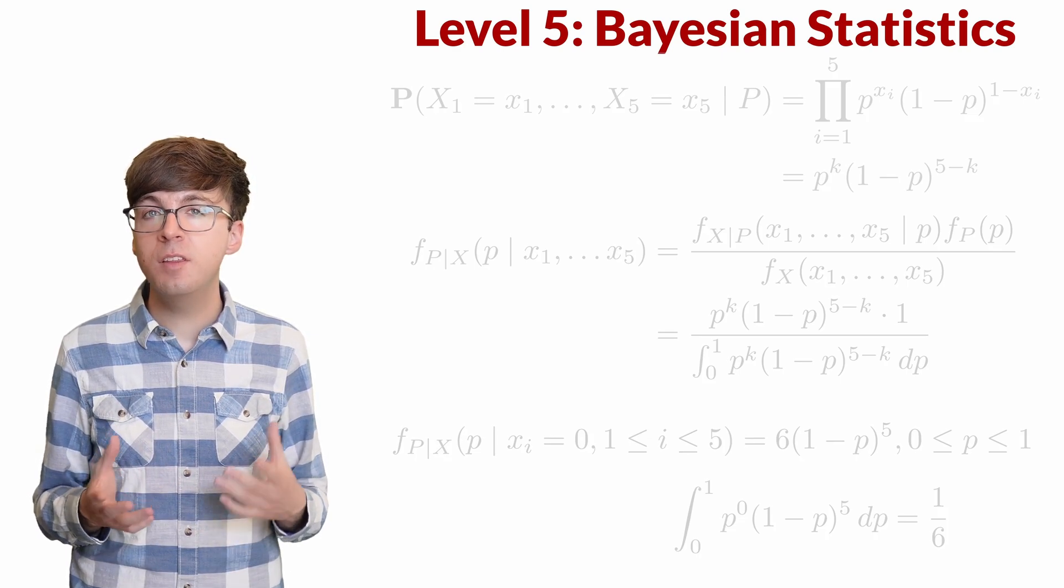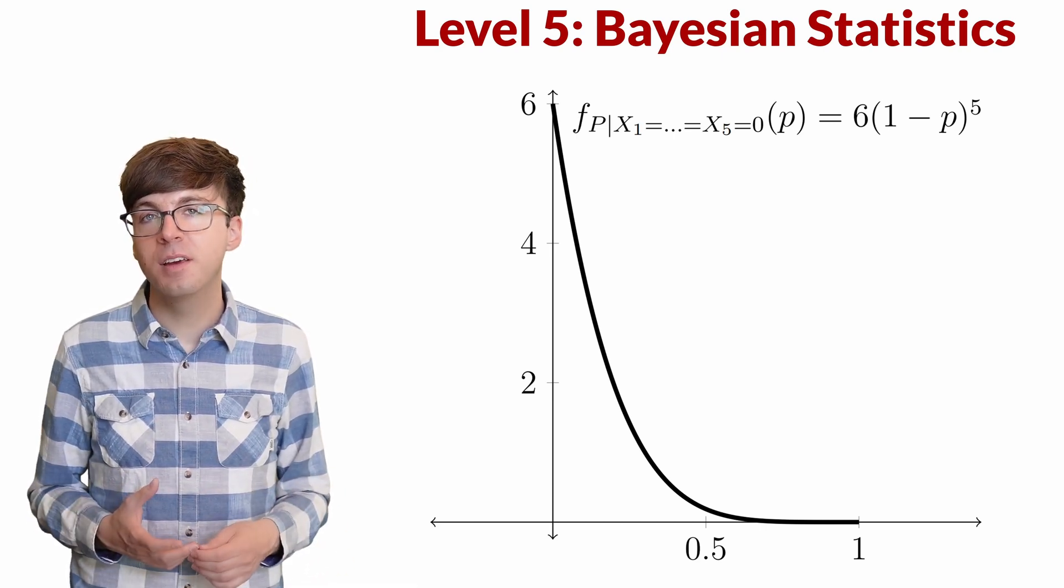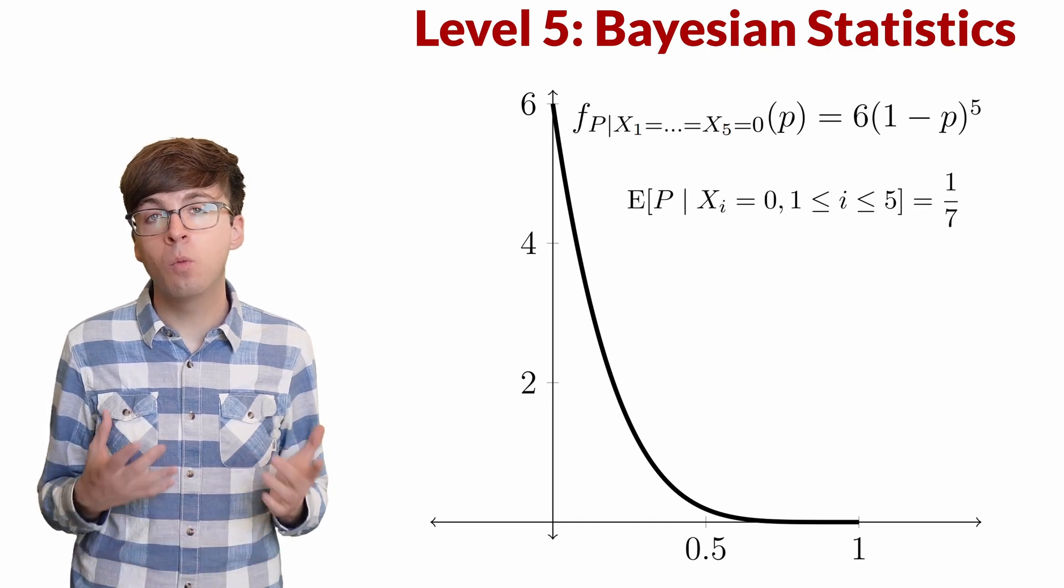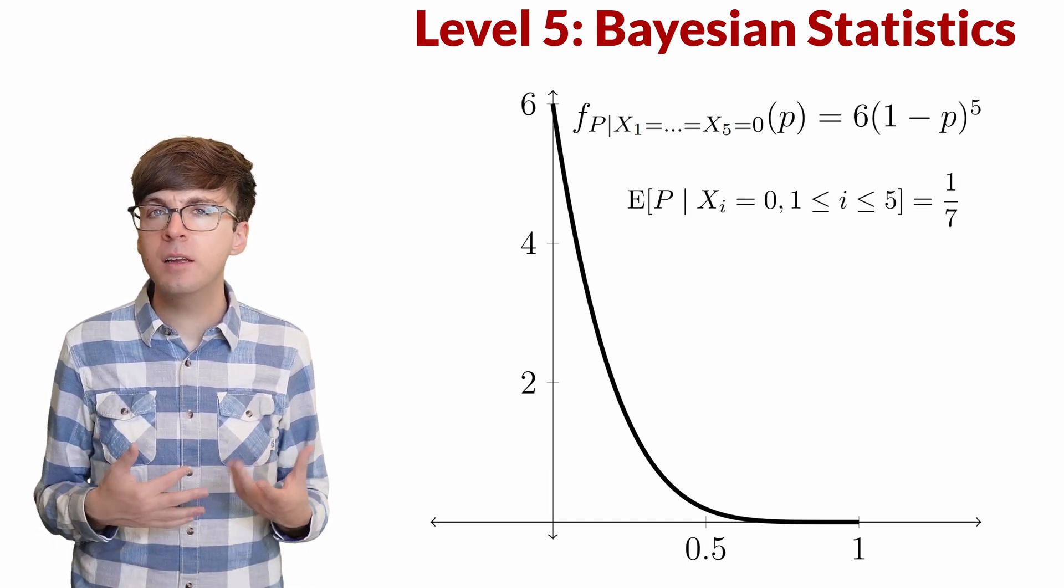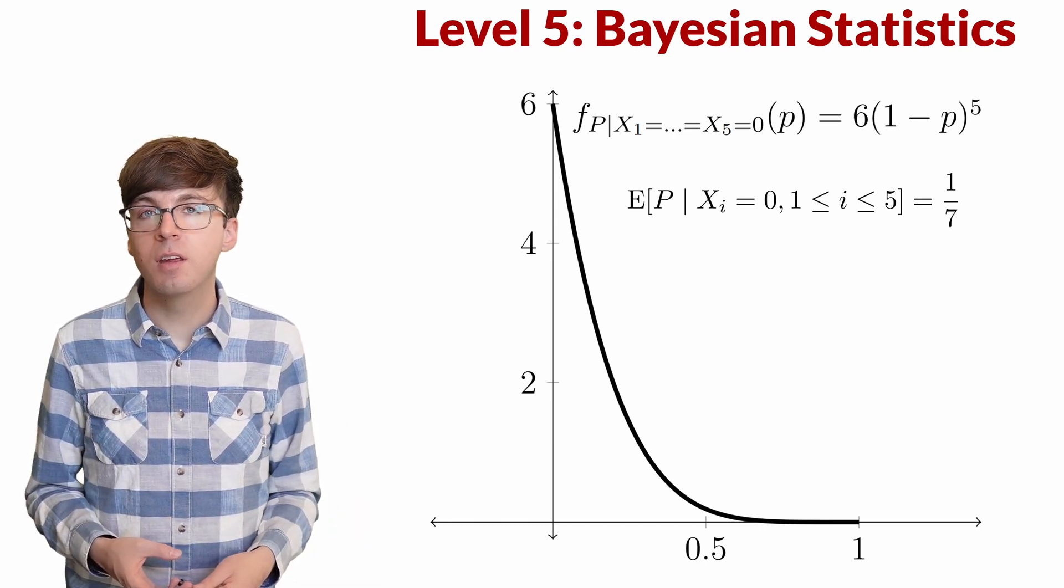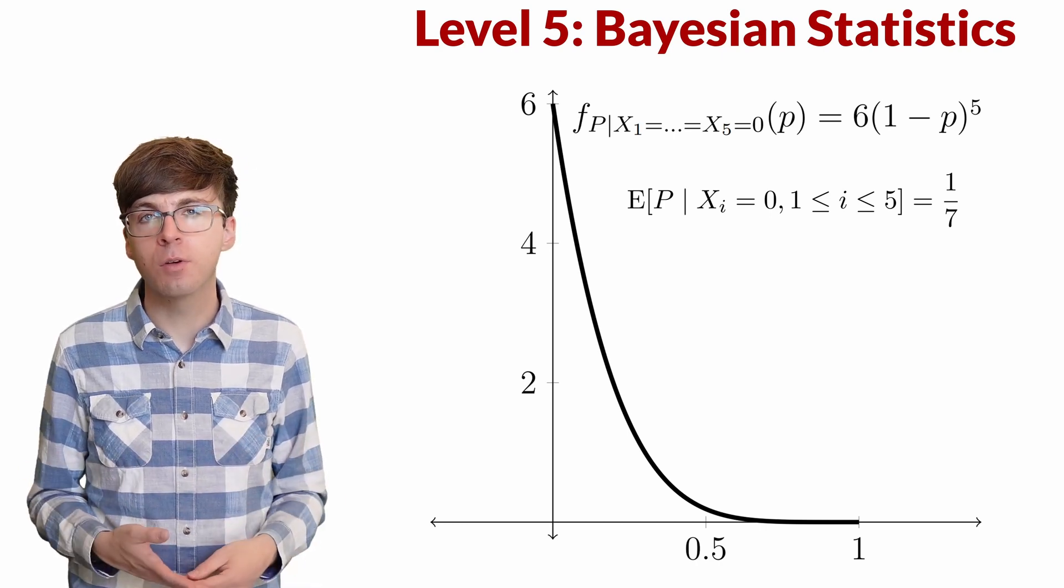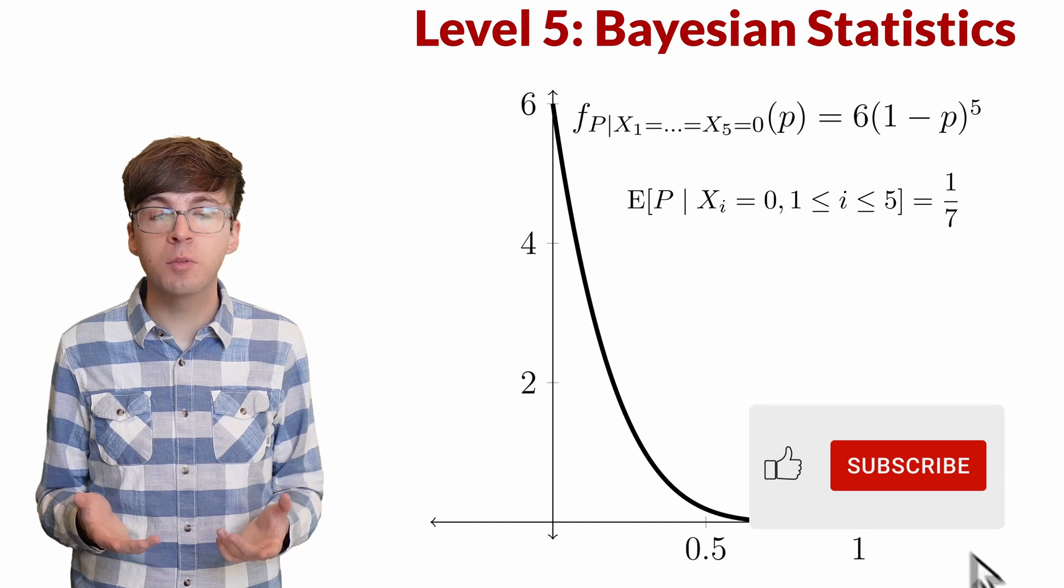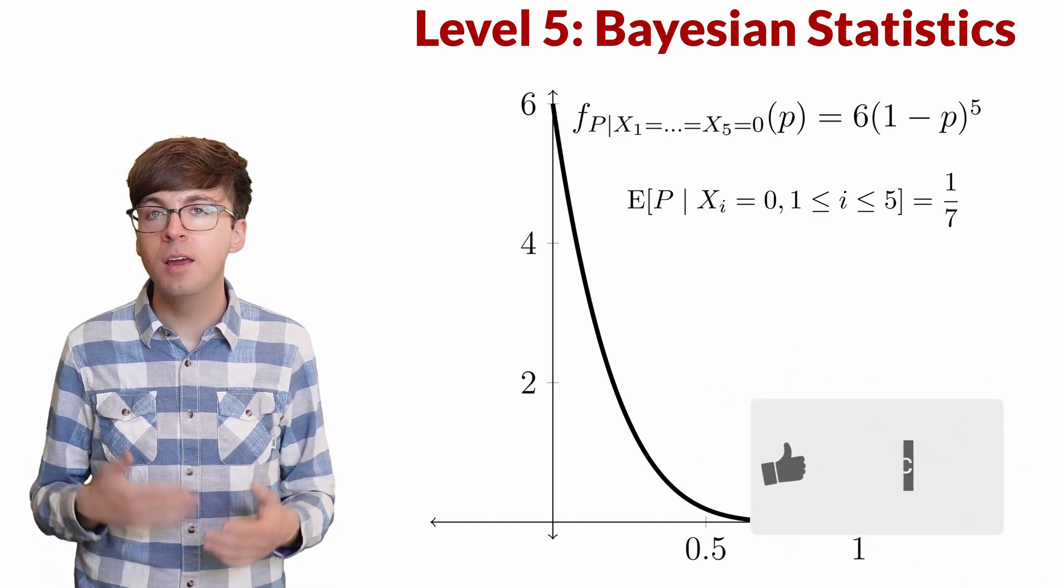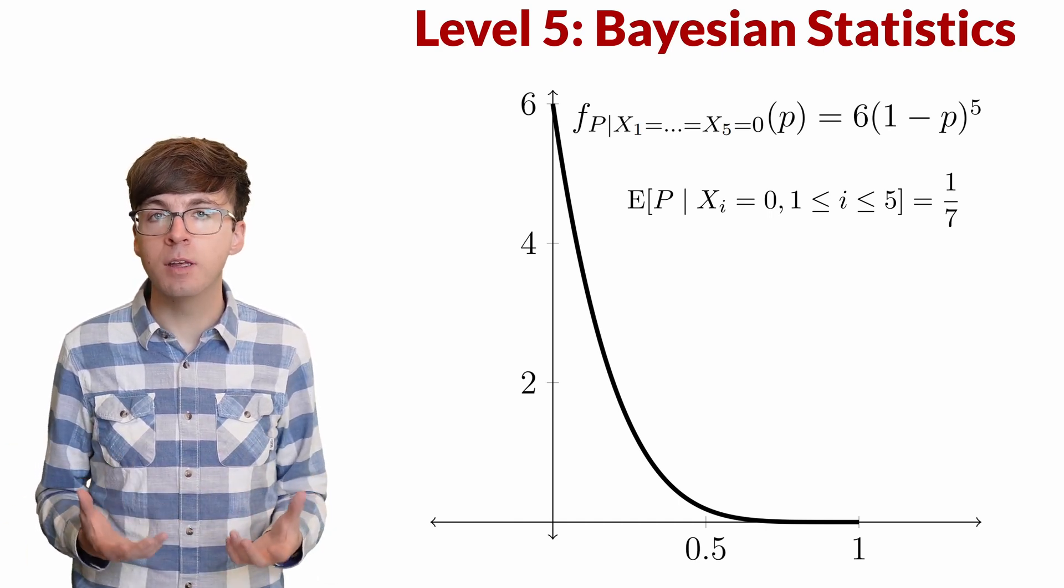Graphing this, we see that p is likely to be closer to zero and farther from one as we'd expect. If we find the expected value of the posterior distribution, we get one-seventh. So if we had to make a specific guess for the value of p, we can guess p equals one-seventh. This is a more reasonable estimator than just saying p equals zero. And if we continue to flip the coin in the future, we can keep updating the distribution of p to get a more and more accurate understanding of what the value of p really is. This is the power of Bayesian statistics.